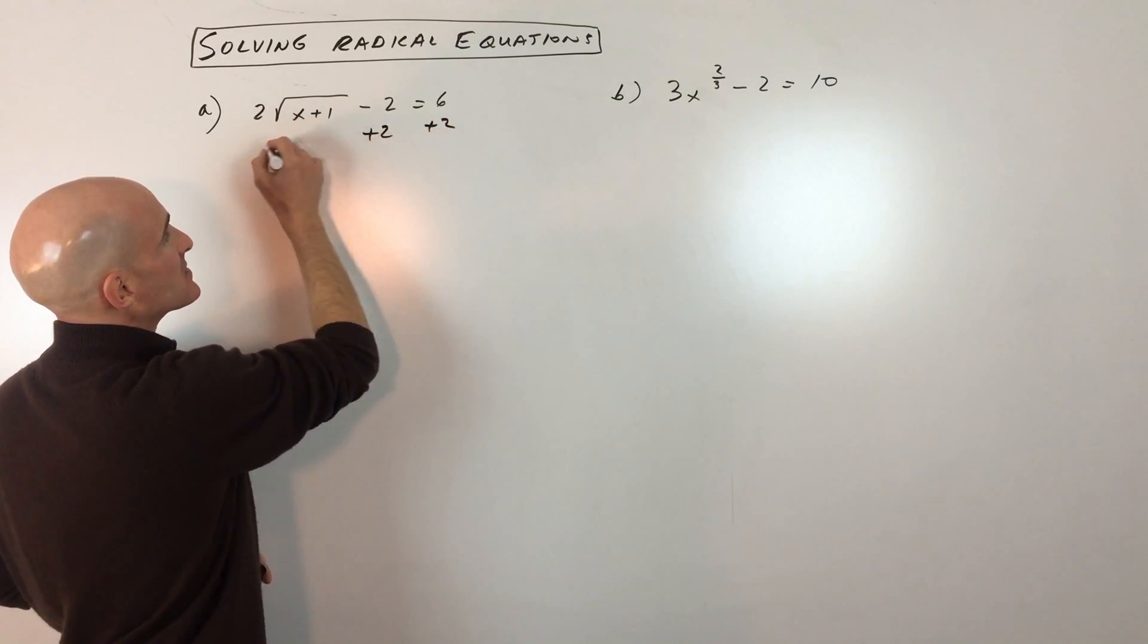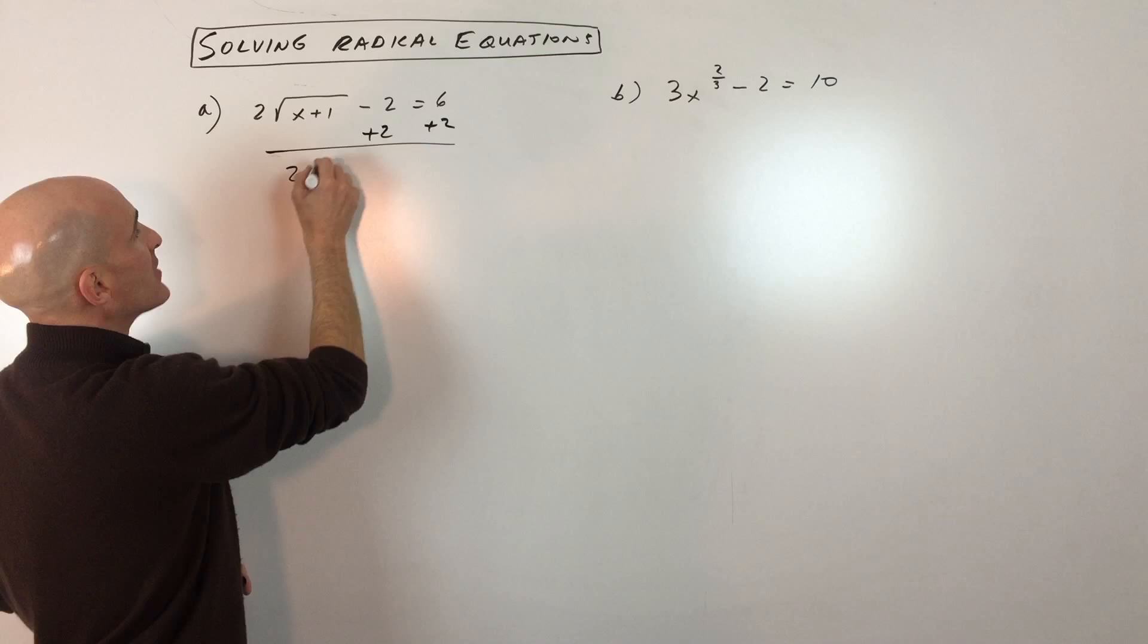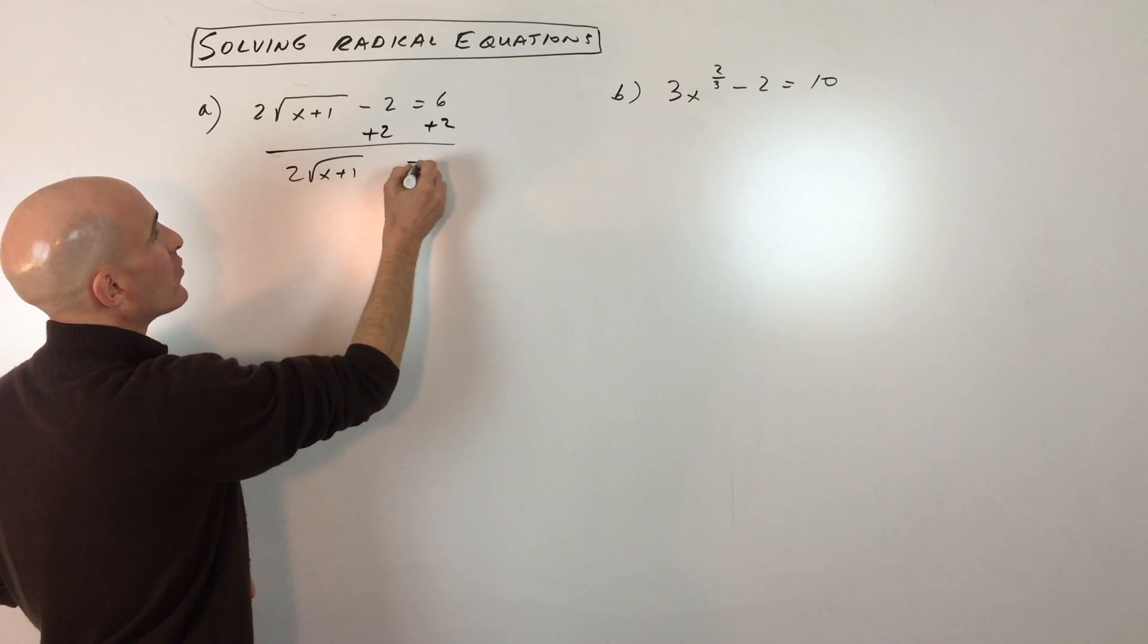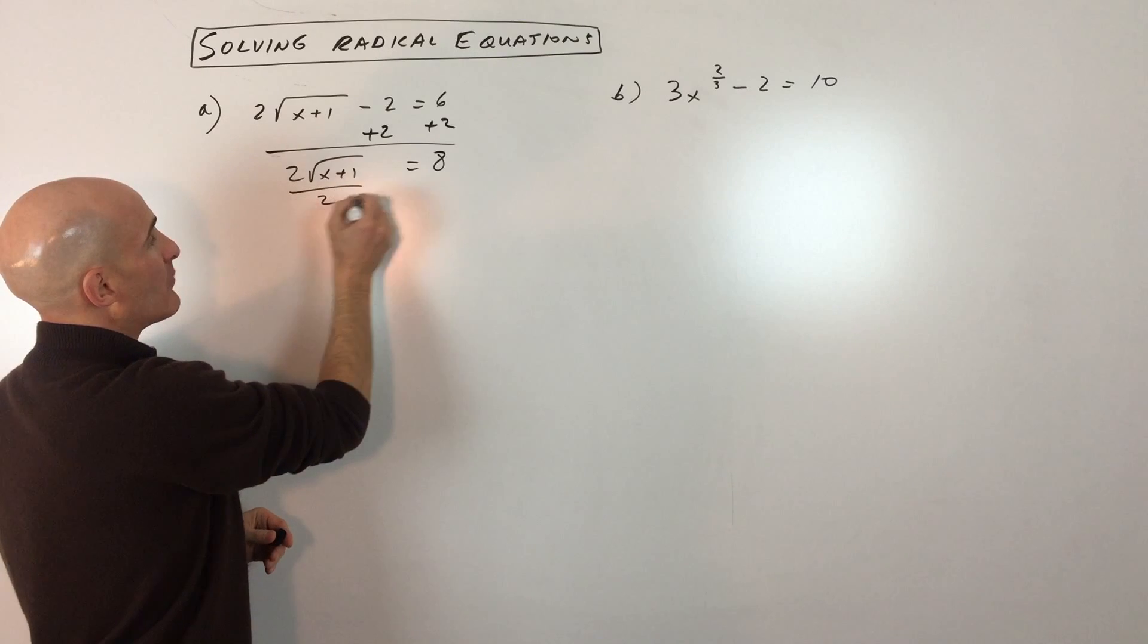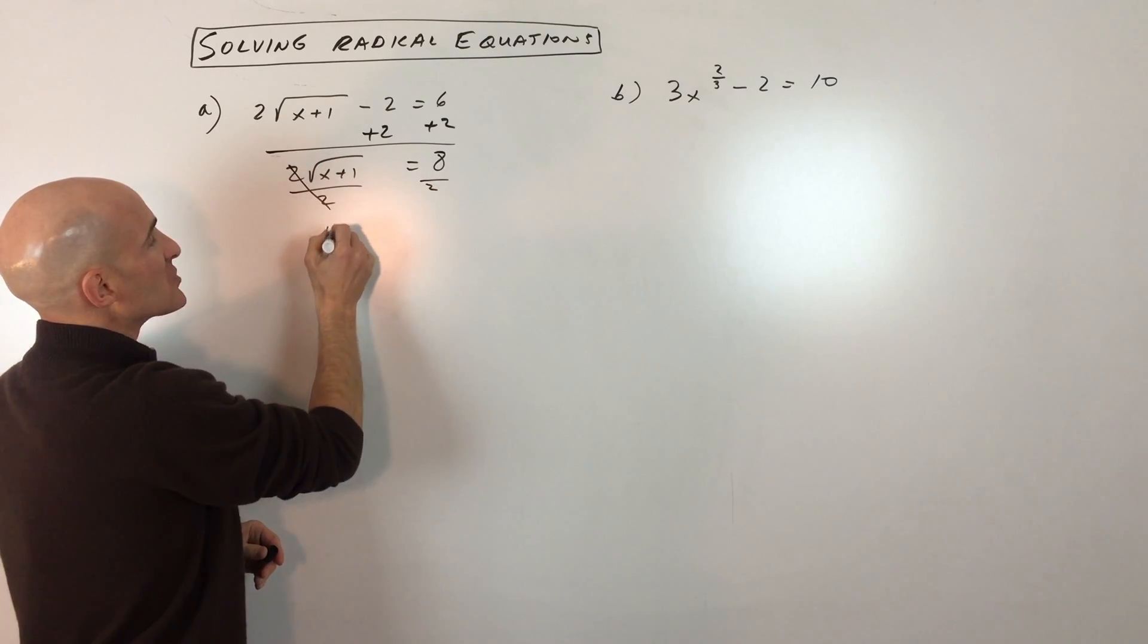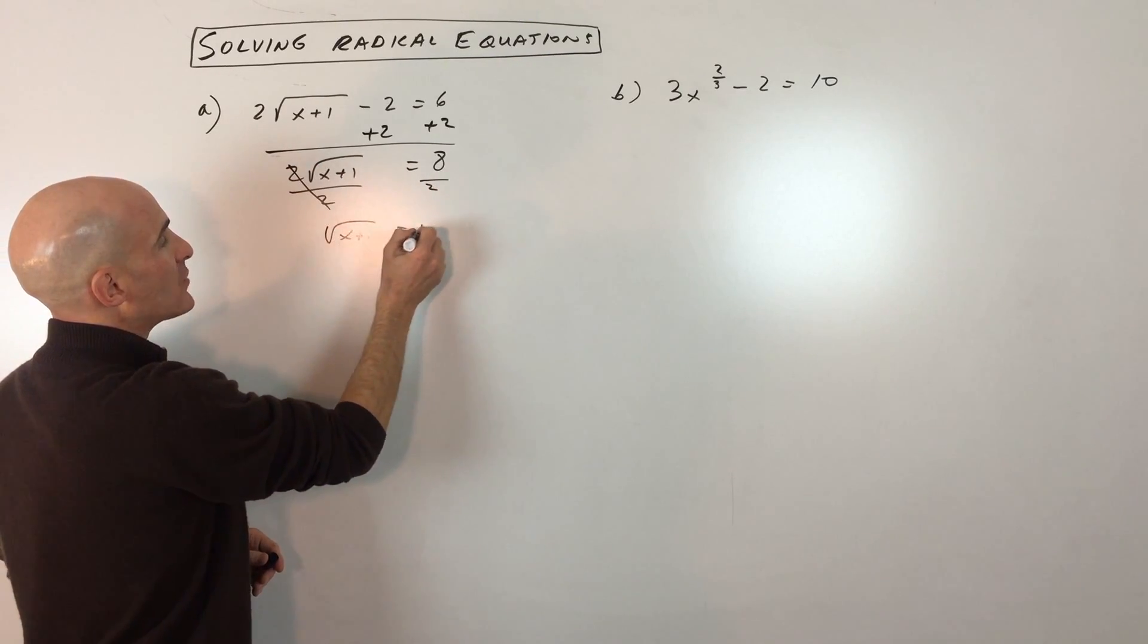I'm going to add 2 to both sides to keep the equation balanced. So that gives us 2 square root of x plus 1 equals 8. I want to do the opposite of multiplying by 2, so I'm going to divide both sides of the equation by 2. Now we're left with square root of x plus 1 equals 4.